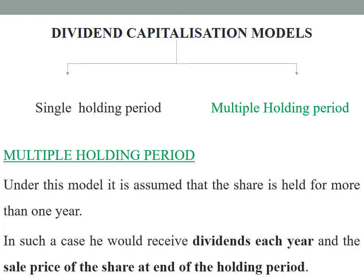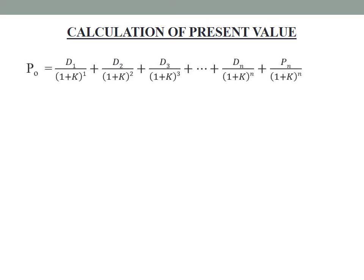This is the calculation of intrinsic value under multiple holding periods. The formula will be the same structure as the single holding period formula. We will move on to the calculation of intrinsic value under multiple holding period. The formula is: P0 is equal to D1 divided by (1 plus k) raised to 1, plus D2 divided by (1 plus k) raised to 2, plus D3 divided by (1 plus k) raised to 3, up to Dn divided by (1 plus k) raised to n, plus Pn divided by (1 plus k) raised to n.